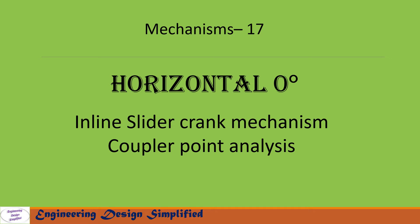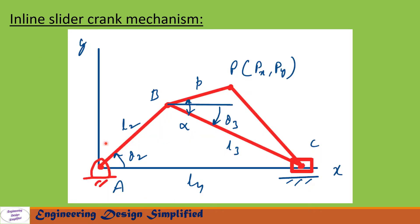Here is a typical inline slider crank mechanism. This link is the crank, this link is the coupler with length l3, this link has length l2, this is a fixed link with length l4, and this is the slider. On the coupler there is a link of length p, and this point we call the coupler point P. In this video we are going to discuss how to find px and py for a given crank angle.